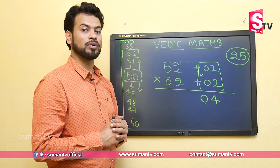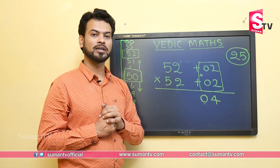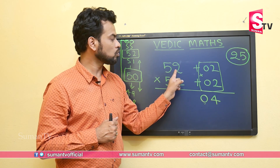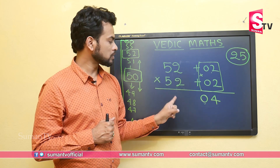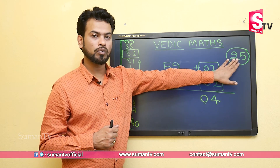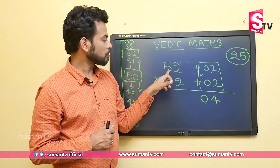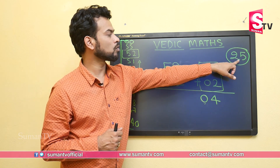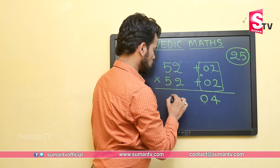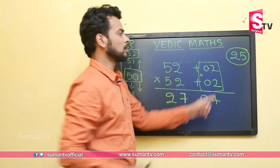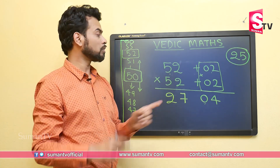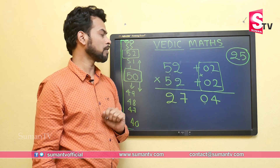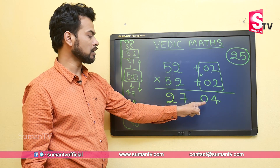In the second step, we use the magic number. Since 52 is 2 more than 50, we add 2 to the magic number 25, giving 25 plus 2 equals 27. So the answer to 52 squared is 2704.